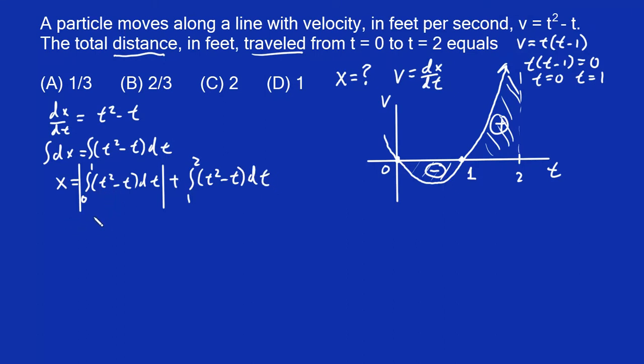And then we're going to add that to the integral from one to two of t squared minus t dt. So when we do this, the integration just involves increasing the power by one and multiplying by the reciprocal. So we would get one third t cubed minus one half t squared, and this is going from zero to one. But again, this is the absolute value.